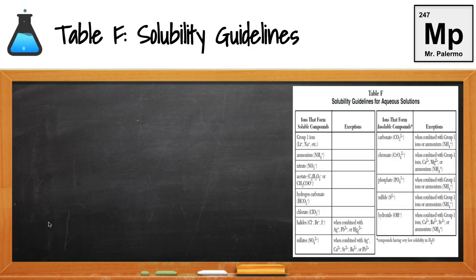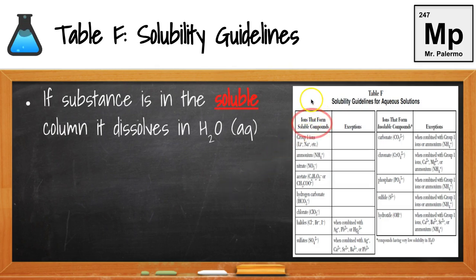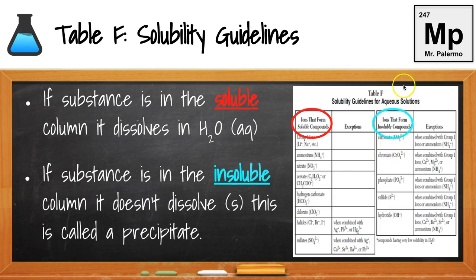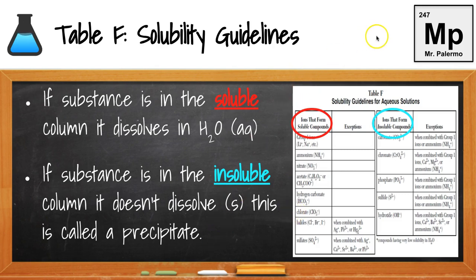Let's look at Table F, our solubility guidelines for aqueous solutions in our reference table. This shows us which substances are soluble in water and which are insoluble. In the first column on the left-hand side are our soluble ions — they will dissolve in water and form an aqueous solution, with relatively high solubility. In the first column on the right-hand side are our insoluble ions — they don't dissolve well in water and will form a solid, or precipitate, in solution.